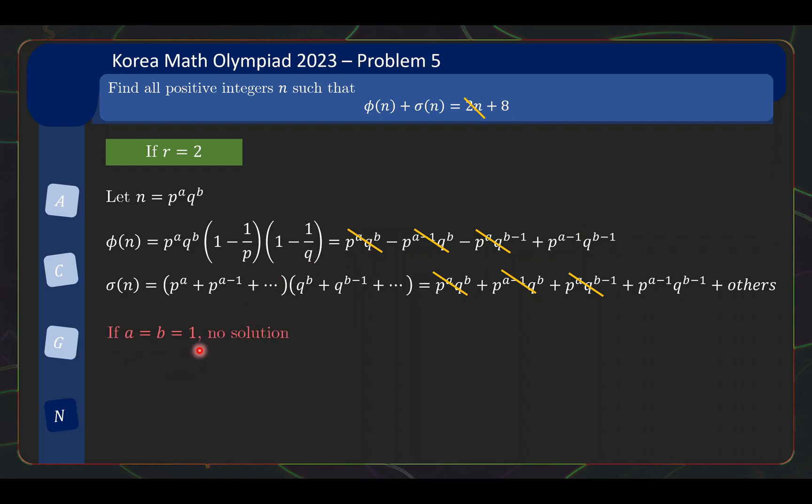Now, if a equals b equals 1, then there's no others, the sum stops here and stops here, and this part and this part are each equals to 1, so you have 2 equals to 8, there is no solution. Now, otherwise, at least one of the terms is bigger than 1, so let's say a is bigger than or equal to 2. Now, when a is bigger than or equal to 2, what happens? Well, firstly, I know that there's at least a p^(a-2) term here, so I'm going to expand the p^(a-2) into q^b and q^(b-1) to get these 2 terms here, and then I still have potentially plus others, which represents the contributions if there are things remaining in the sum, and we expand that bracket.